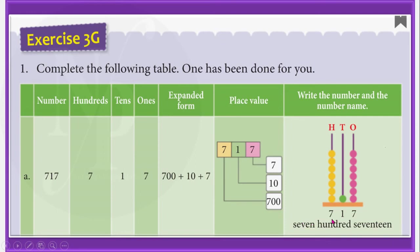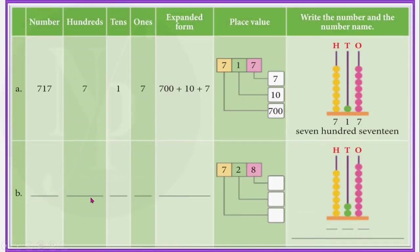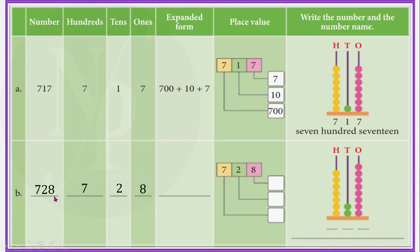Likewise, we should complete the other tables given below. So here in B, these spaces are left blank. We should fill them. The number is 728. Let us write this number in the first column. In 728, how many hundreds are there? Yes, there are 7 hundreds. Let us write 7 here. And how many tens are there? There are 2 tens, so we should write 2 here. And how many ones are there? 8 ones. So we have to write 8 here. Expanded form of 728 is 700 + 20 + 8.